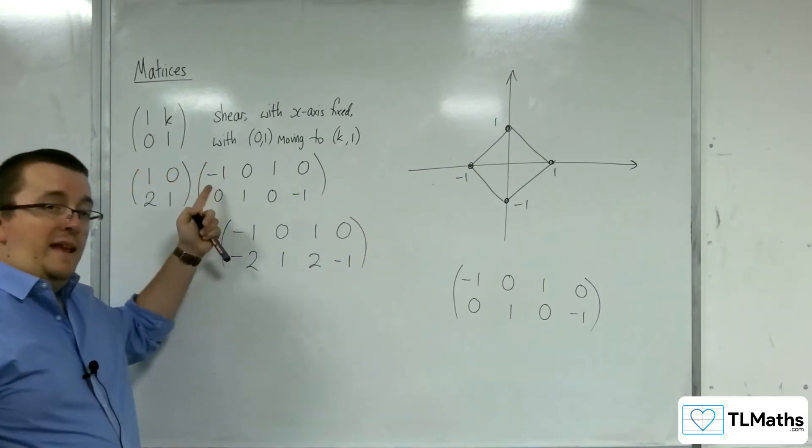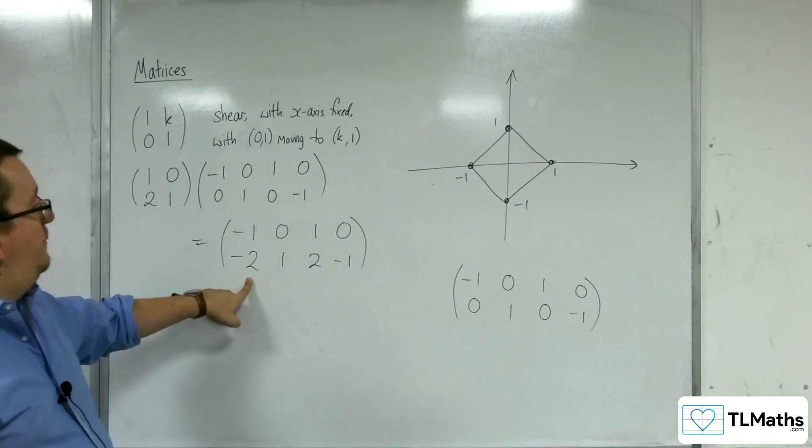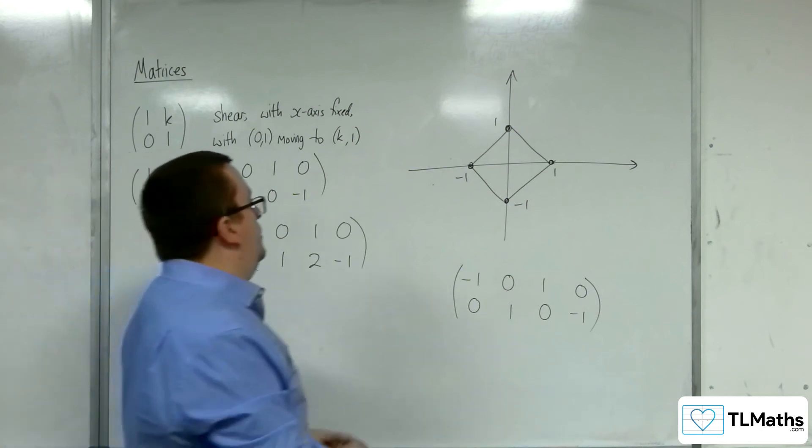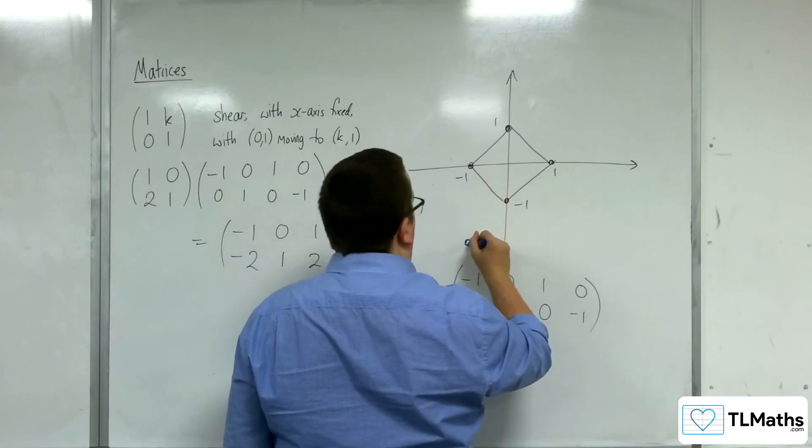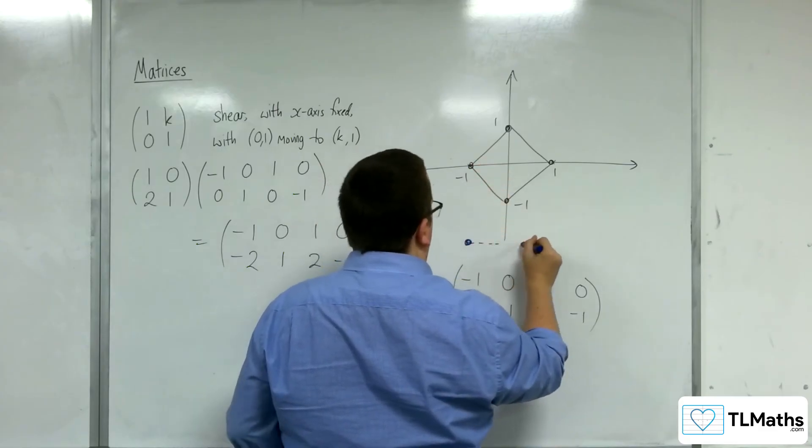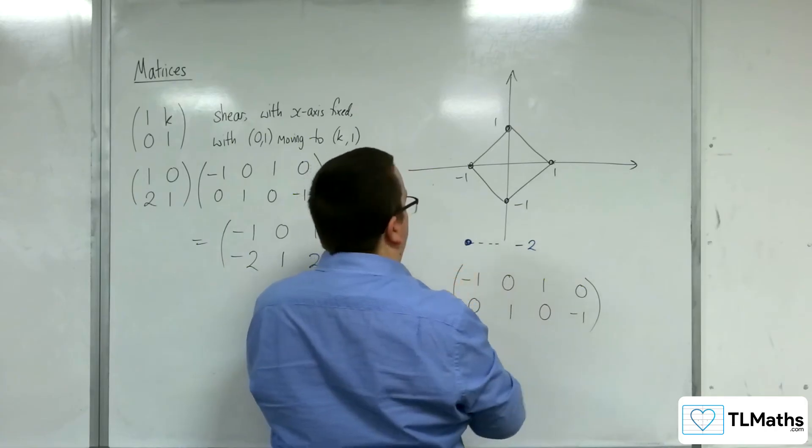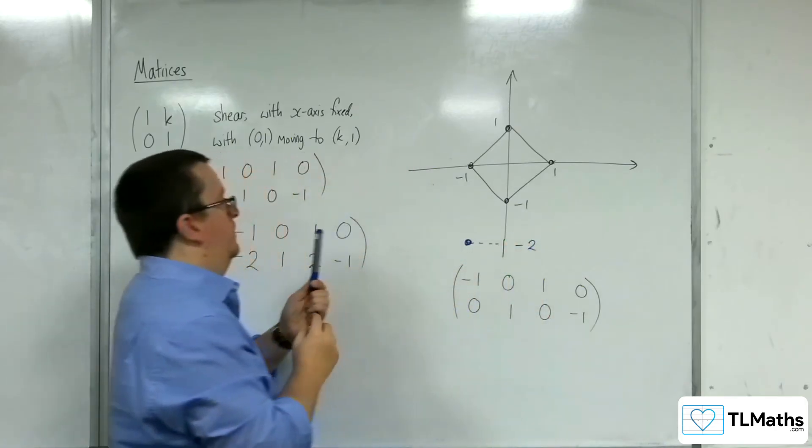So our first point was negative 1, 0. That's being mapped to minus 1, minus 2. So this point is going to minus 1, minus 2. So somewhere down here.